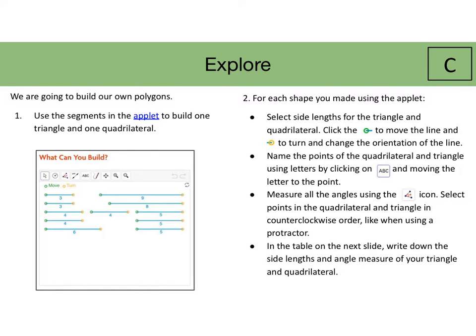Additionally, it would be important to show students how to name the points of the quadrilateral and triangle by clicking on the ABC and moving the letter to the point. And if they want to measure the angles to select the protractor icon. Additionally, students might be confused as to what the numbers represent and the numbers represent the sidelines. So you can demonstrate for students a three by three by four triangle as an example.